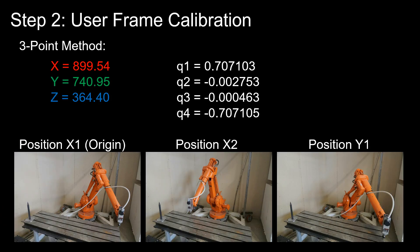Here we use a built-in three-point method in the controller. So the bottom left picture shows position X1, which is the origin of the user frame. And here we put that at the corner of the machining table.